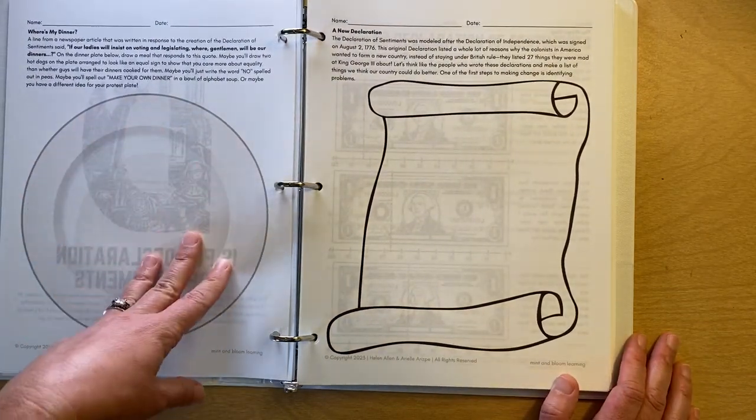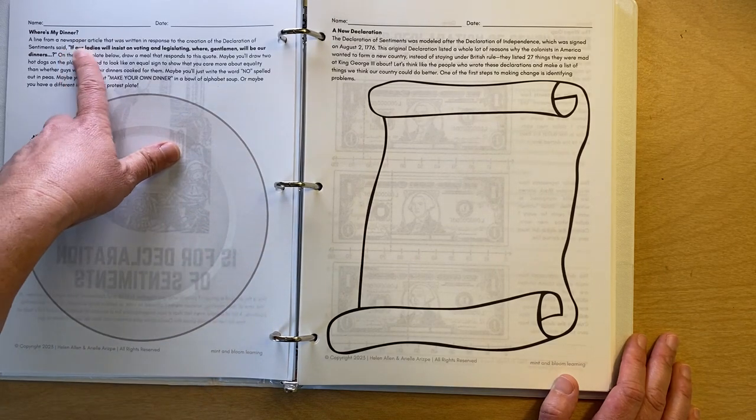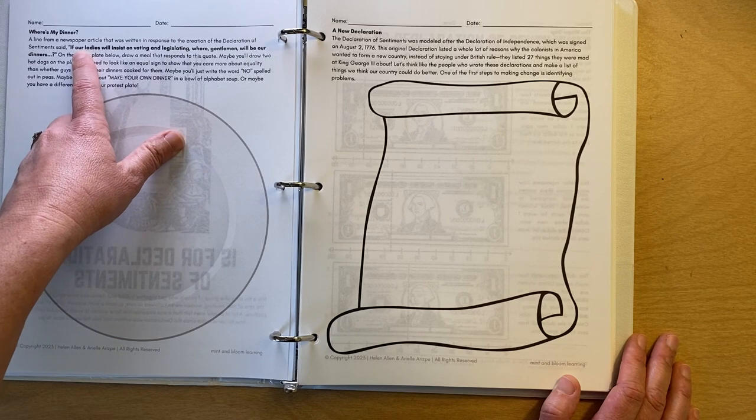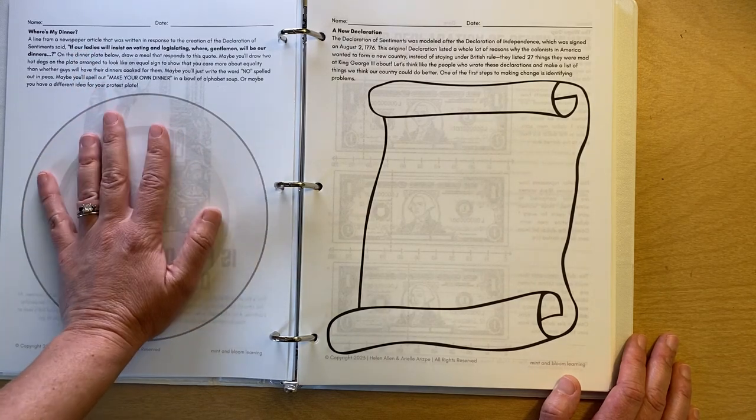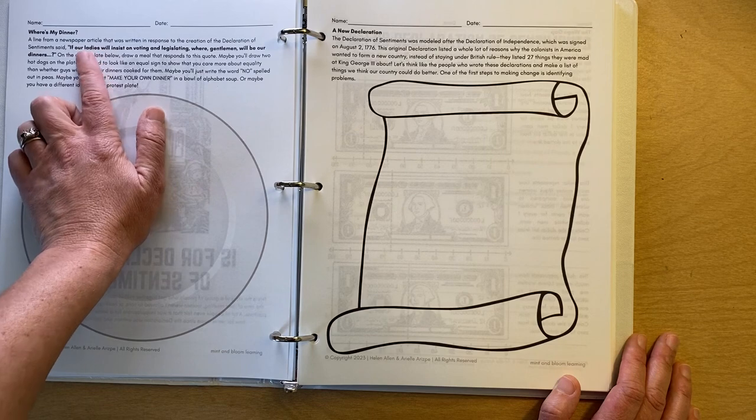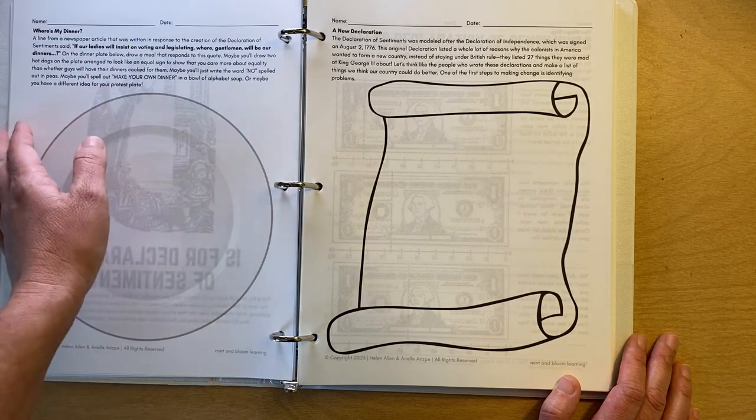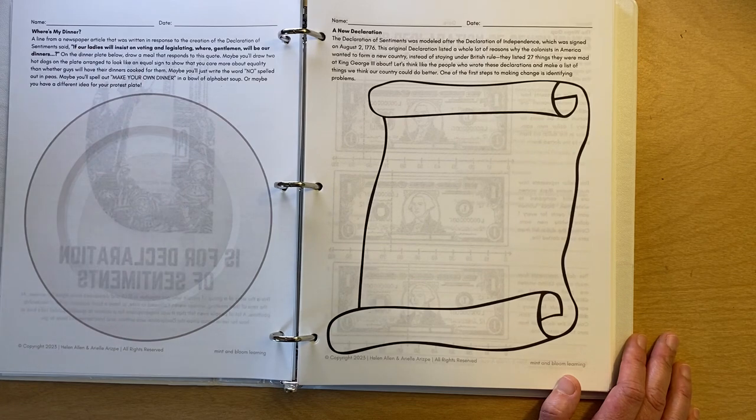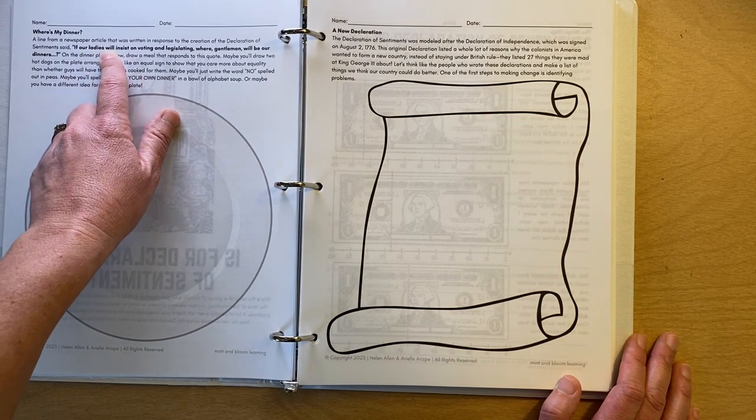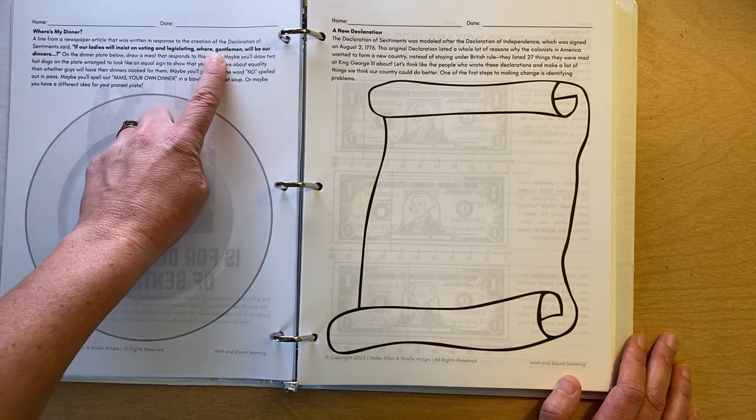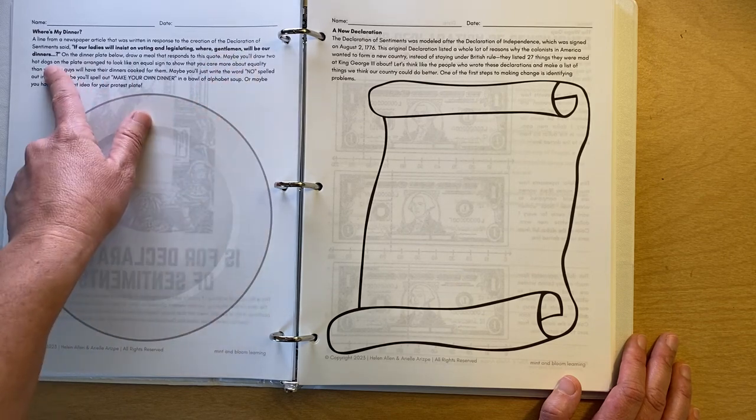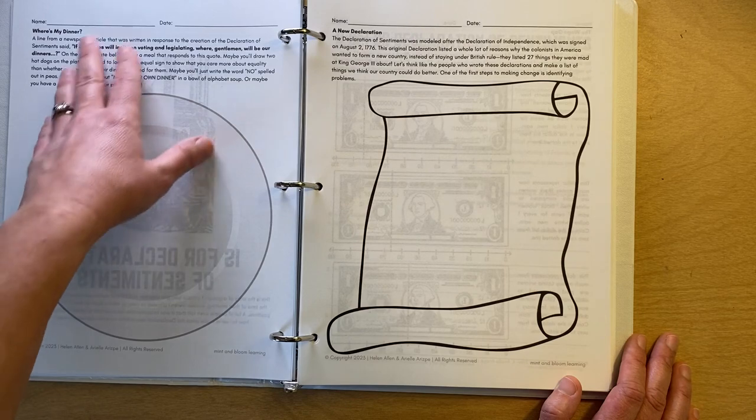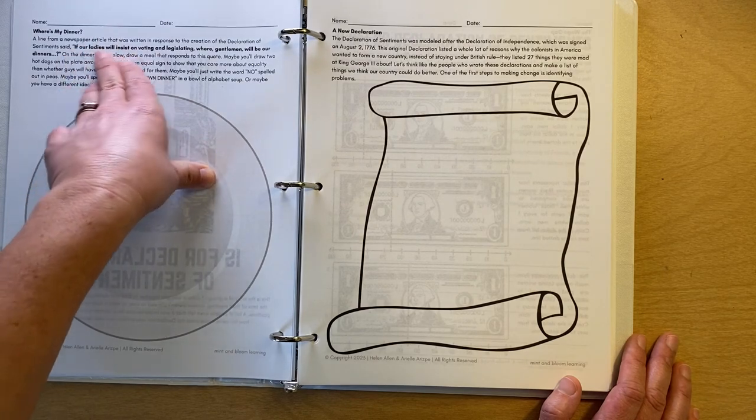We have a really fun activity to make a protest plate based off of a newspaper article, a line from a newspaper article about women who were fighting for the right to vote and for the right to be treated as equals, more importantly in that time. But the quote was, if our ladies will insist on voting and legislating, where gentlemen will be our dinners. And so we invite kids to make a message and food in response to that quote.